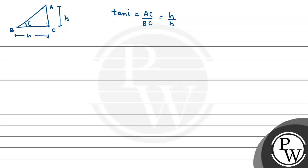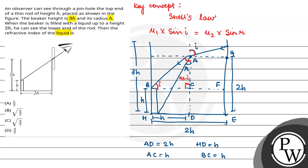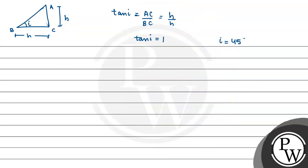h by h will be equal to 1, so i will be equal to 45 degrees. If we add r, let's see what will happen. If this is angle r, it will be 90 minus r. When we look at this triangle, this is r, so this will be r. Now this triangle is AHD.